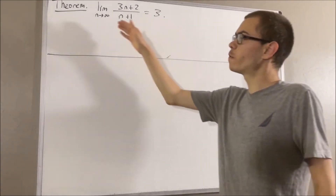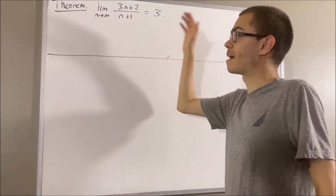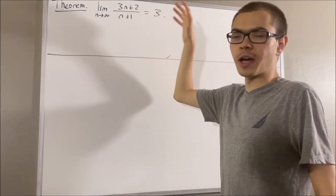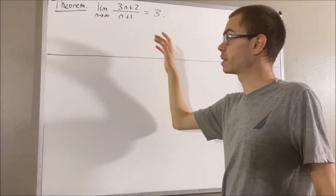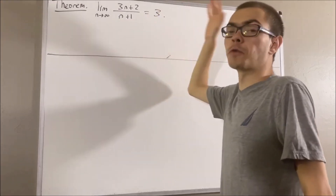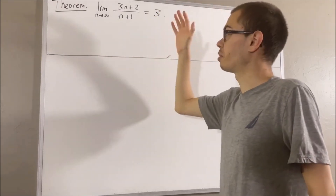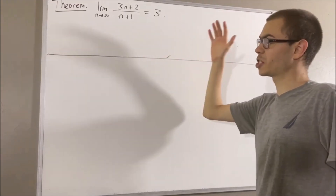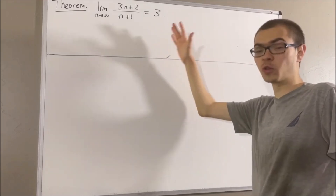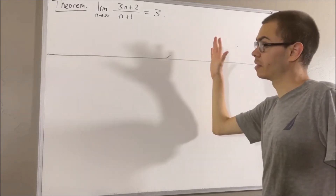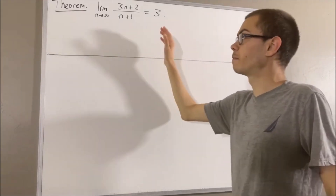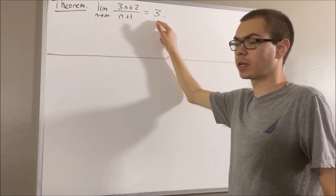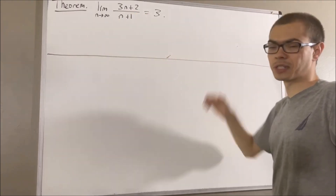Now, in proving this theorem, we are going to use the definition of the limit of a sequence. By definition of the limit of a sequence, this means that for all epsilon greater than 0, there exists a positive integer k, such that for all positive integers n greater than or equal to k, the absolute value of 3n plus 2 over n plus 1 minus 3 is less than epsilon.